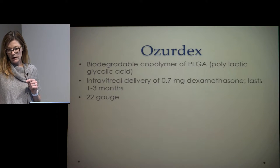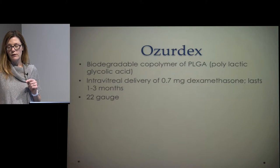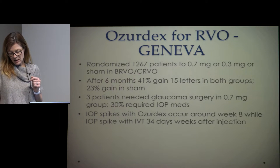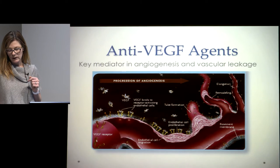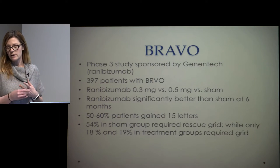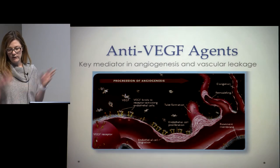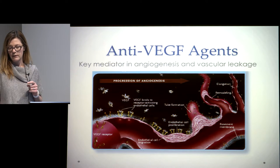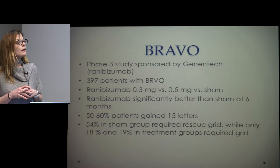Shortly thereafter, Ozurdex was approved — an intravitreal delivery device of dexamethasone lasting one to three months — and a large study found significant improvement in vision in the Ozurdex group. Then the anti-VEGF studies came out. VEGF is a key mediator in angiogenesis and vascular leakage, which is the rationale behind it working in vascular occlusions with associated macular edema.